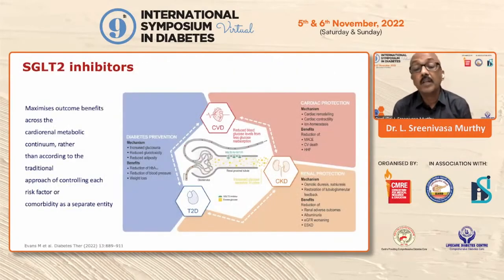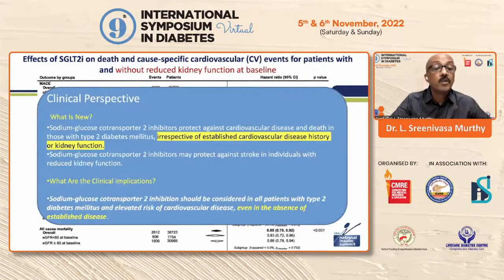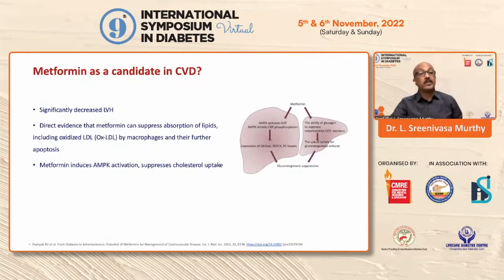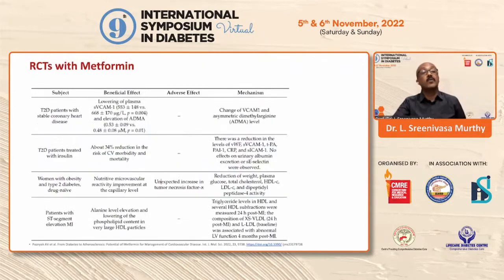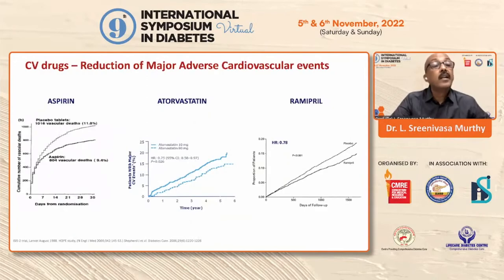This class of molecules has changed our approach to treatment, and all the guidelines have changed following the CVOT trials. The DPP-4s do not increase CV outcomes; the SGLT2s — EMPA-REG, CANVAS — should now be considered in all patients with diabetes and elevated risk of cardiovascular disease, even in the absence of established disease, with only risk factors. DPP-4s and SGLT2s work better in Asian ethnicity, which is important for us as Indians, and they have become cost-effective. The age-old metformin, discovered in 1957 and FDA-approved in 1994, definitely has a positive role in CVD, and I am a strong proponent for using metformin in most of our patients — probably 99%.